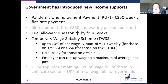The temporary wage subsidy scheme is available to companies that satisfy certain criteria around their expectations to pay salaries and their expected turnover. It subsidizes up to 70% of the net wage of those earning less than 586 euro per week, up to a maximum of 410 euro per week. For those earning more than 586 euro per week, the subsidy is only 350 per week. There is no subsidy for those earning more than 960 euro per week. Employers can top up wages up to a maximum of average net pay, but there are notches in this scheme that matter for the results.